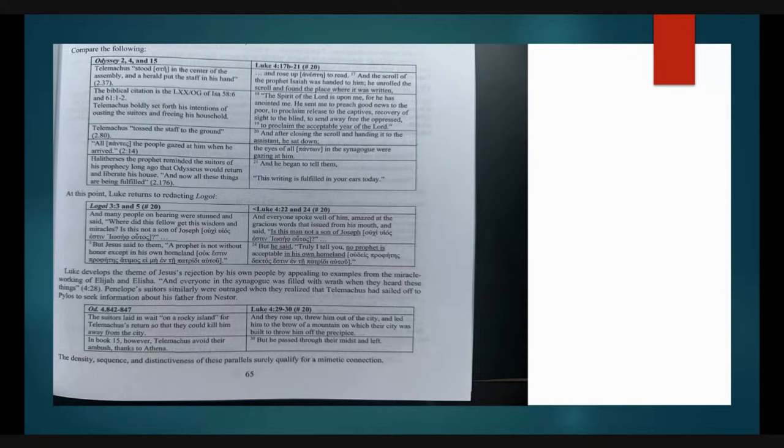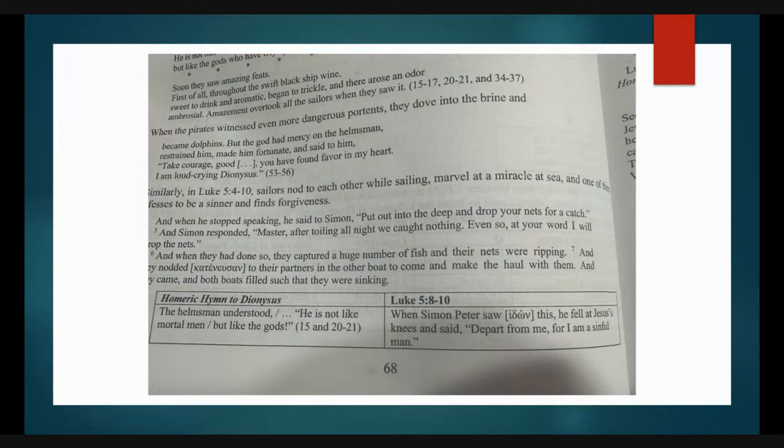Telemachus boldly set forth his intentions. The spirit of the Lord is upon me for he has anointed me. He sent me to preach good news to the poor, to proclaim release to the captives. Telemachus in disgust tossed the staff to the ground. After closing the scroll and handing it to the assistant he sat down. All the people gazed at him. The eyes of all in the synagogue were gazing at him. Halitherses the prophet reminded the suitors of his prophecy that Odysseus would return. And he began to tell them this writing is fulfilled in your ears today. Many people were stunned. Is this not a son of Joseph? A prophet is not without honor except in his own homeland. The suitors were outraged. They rose up, threw him out of the city, to throw him off the precipice. But he passed through their midst and left.